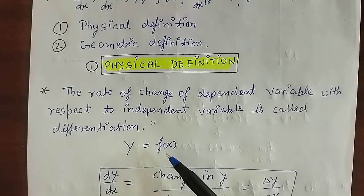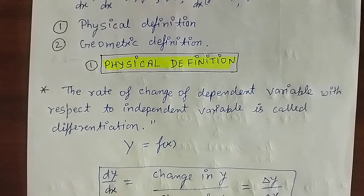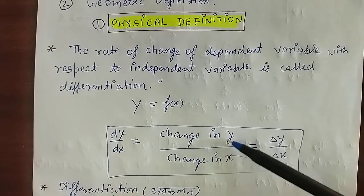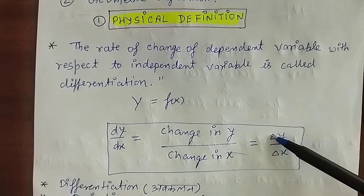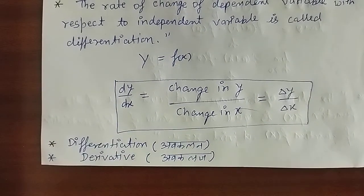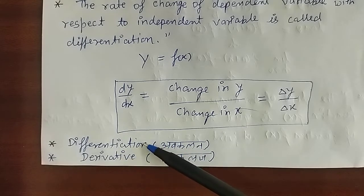The rate of change of dependent variable with respect to independent variable is called differentiation. अगर y equal to f of x कोई function है जहाँ x independent variable है और y dependent variable है, तो independent variable में change होने पर dependent variable में जो change होता है उस rate को हम differentiation बोलते हैं। इसे हम dy by dx equal to change in y upon change in x, या del y upon del x के रूप में represent करते हैं।